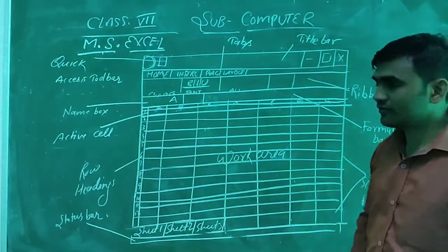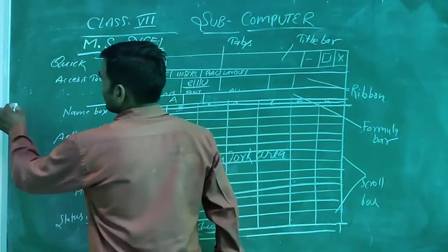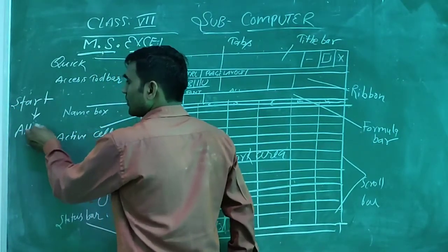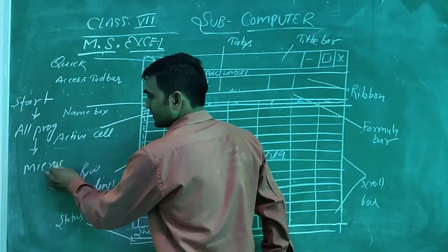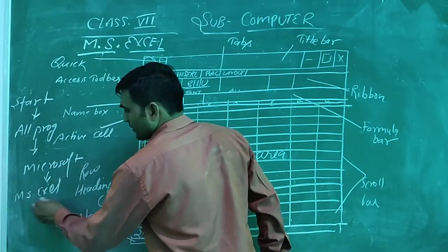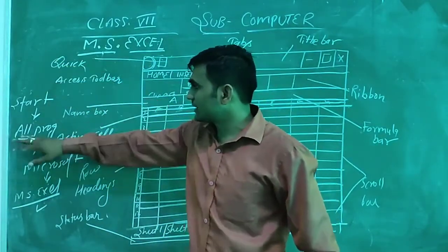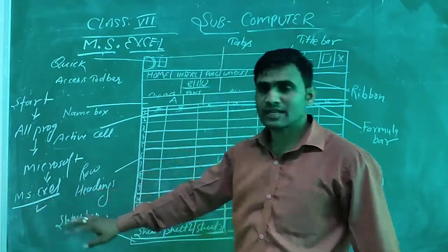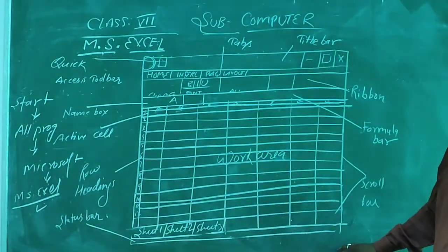Now we don't know how to start Microsoft Excel — it's very simple. Click on Start, then go to All Programs, then Microsoft Office, and after that click on Microsoft Excel. Within a few seconds we can see this window on the computer screen.